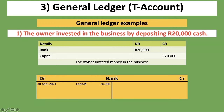We put capital as the detail because we are showing what the money was for — it was a capital contribution. Importantly, you cannot put the name of the ledger account itself as the detail. We're doing the ledger for bank, so you cannot put 'bank' as the description — that would be incorrect. The detail must always be the opposite account.